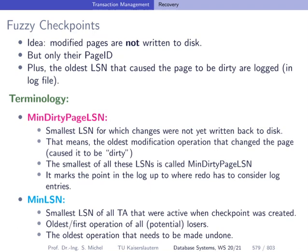The third technique is called fuzzy checkpoints. Here the idea is to limit the time checkpoint creation takes by not writing back the modified pages to disk, but instead writing down only the page IDs of those modified pages. This can be done using sequential writes to the log, avoiding the random IO cost of writing modified pages from the database buffer back to their place on disk. We also write down the oldest log sequence number that caused each page to be modified — also called dirty.